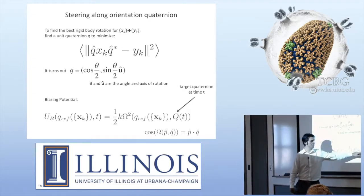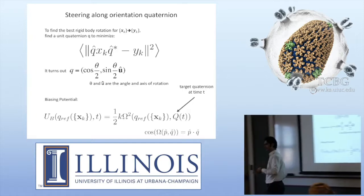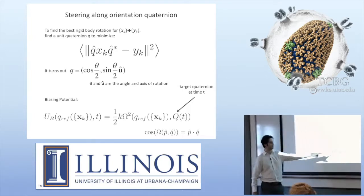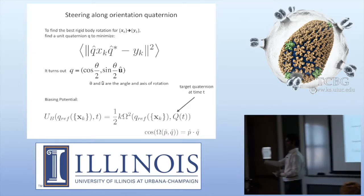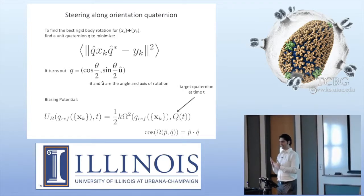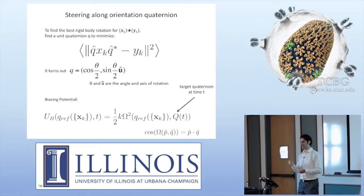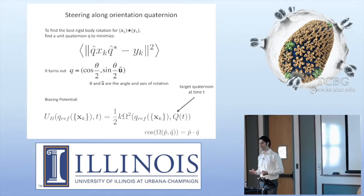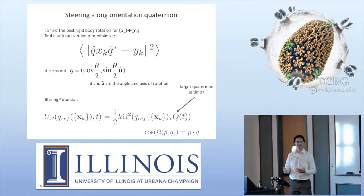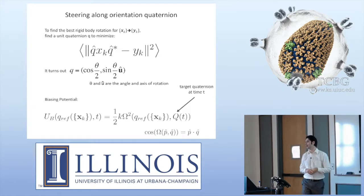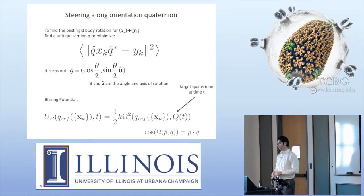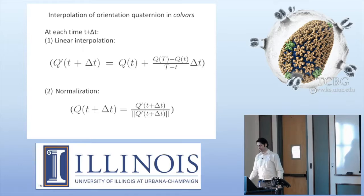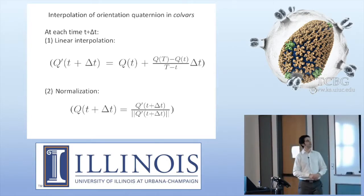This is also coming from your actual conformation at any given time. And this omega here is the distance between the target value at time t — the restraining center at time t — and the actual value of orientation quaternion at time t as well. The distance here is not a Cartesian distance; it is basically a measure of how different the two quaternions are.